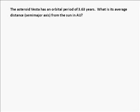The problem we'll be working on in this recording is the asteroid Vesta has an orbital period of 3.63 years. What is its average distance, that's the same as the semi-major axis, from the Sun? And we want our final units to be AU, or astronomical units.